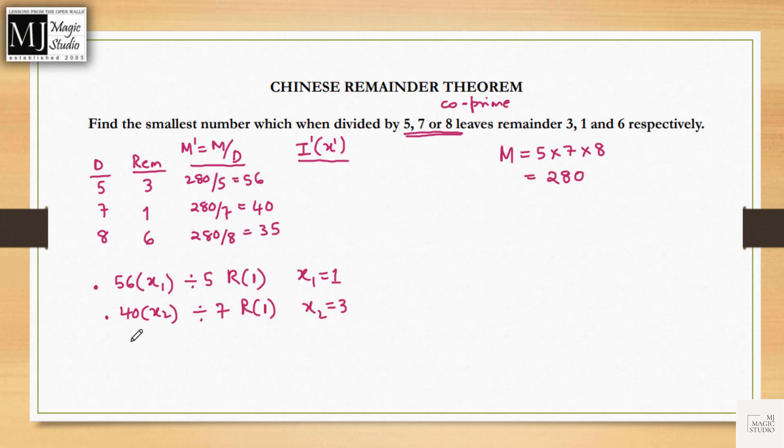120 when divided by 7 will leave remainder 1. Similarly, 35 x3 when divided by 8 should leave remainder 1. 35 by 8 is remainder 3. If I multiply 3 times, 3 into 3 will be 9, that will leave remainder 1. Bingo! So value of x3 would be 3. So next step is to find multiplicative inverse - that would be 1, 3, 3.